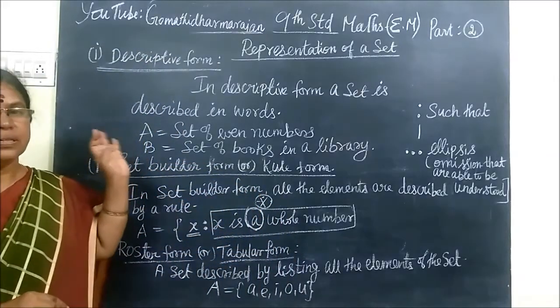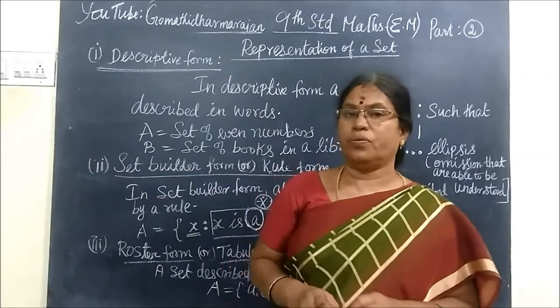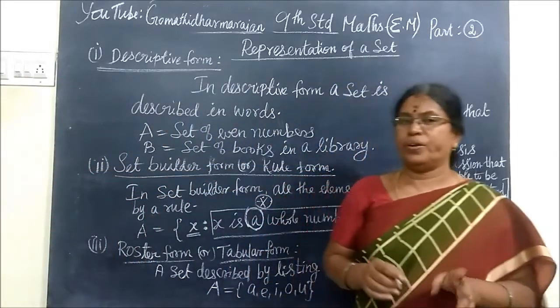First one is descriptive form, then the second one, set-builder form, third one, roster form or tabular form. This is very easy.